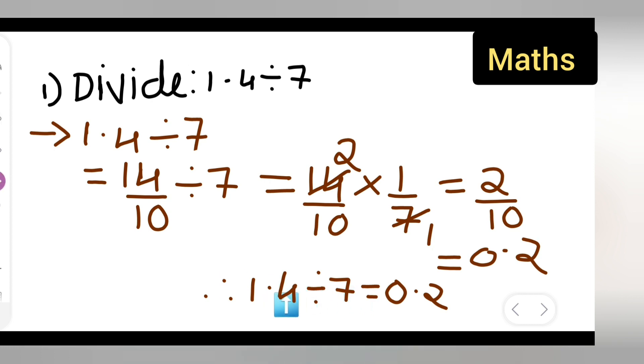Therefore, you can write down that 1.4 divided by 7 is equal to 0.2. I hope you have understood how to divide the number with the decimal point and without a decimal point. Thanks for watching.